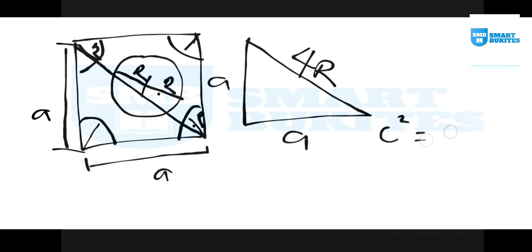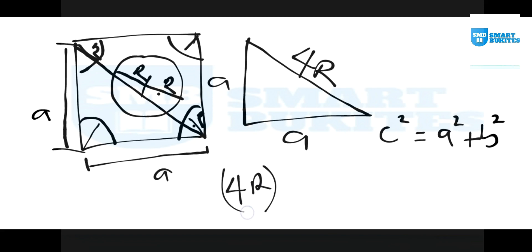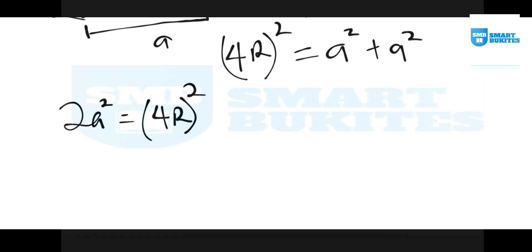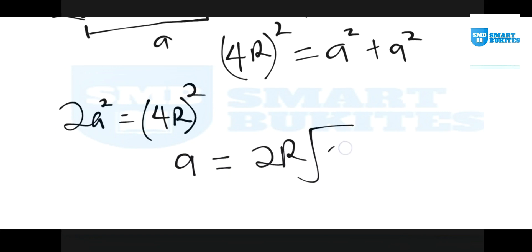If we consider this right triangle on the face, we use the Pythagorean theorem: c² = a² + b². The hypotenuse c is 4r, so (4r)² = a² + a², which gives 16r² = 2a². Solving further, a = 2r√2. This is the value of the side length 'a' in terms of r.